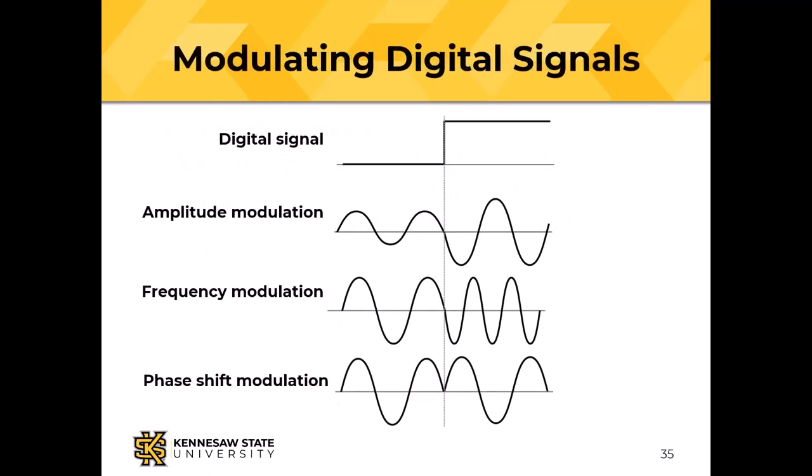Looking at the diagram: a transition from 0 to 1 with amplitude modulation increases the signal amplitude; with frequency modulation the frequency changes; with phase modulation the phase of the carrier sine wave changes. These are amplitude modulation, frequency modulation, and phase shift modulation.